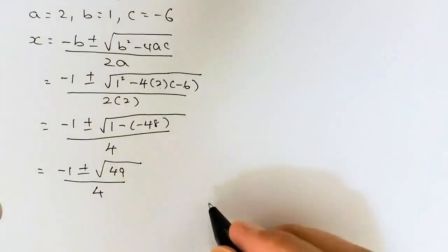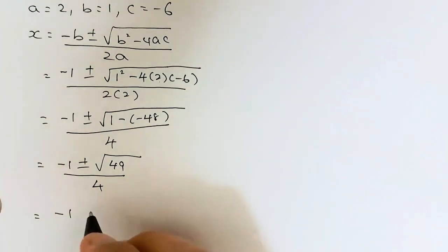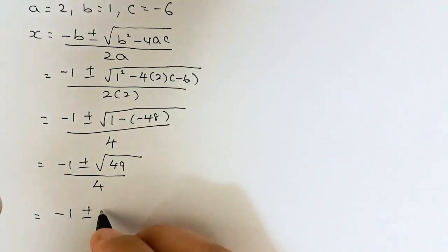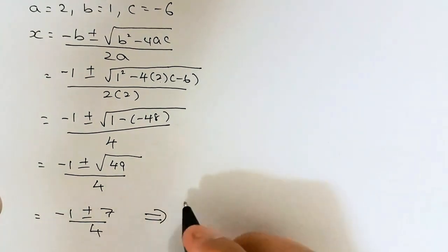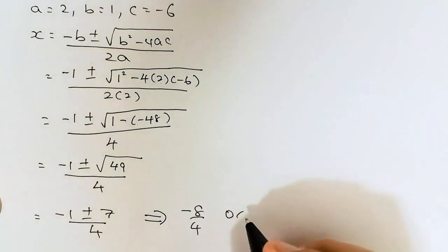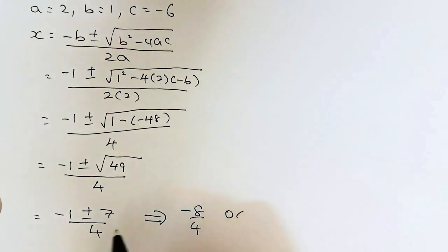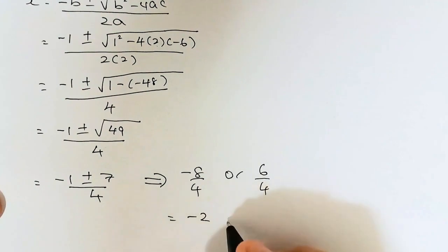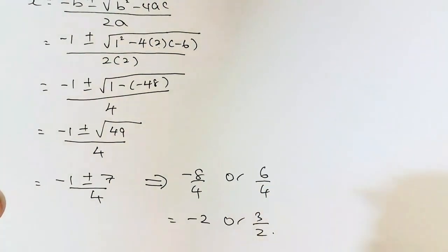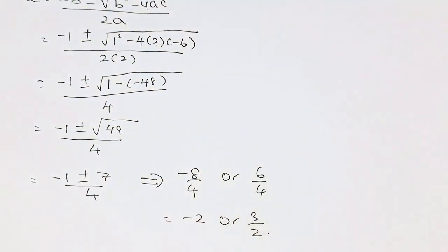Simplifying further, we get minus 1 plus or minus the square root of 49 over 4, which is minus 1 plus or minus 7 over 4. So the two answers are: minus 1 minus 7 equals minus 8 over 4, which is minus 2, or minus 1 plus 7 equals 6 over 4, which simplifies to 3 over 2. That is how you solve a quadratic using the quadratic formula. Hope you have learned something — see you soon.